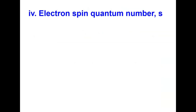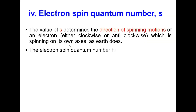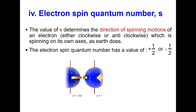The last quantum number is the electron spin quantum number S. The value of S determines the direction of the spinning motion of the electron — either clockwise or anticlockwise — spinning on its own axis as Earth does. The electron spin quantum number has a value of +½ or −½. Clockwise motion has a value of +½ and anticlockwise motion has a value of −½.